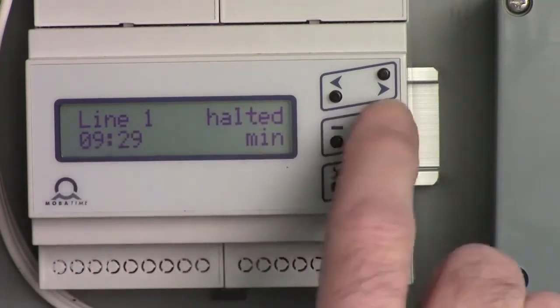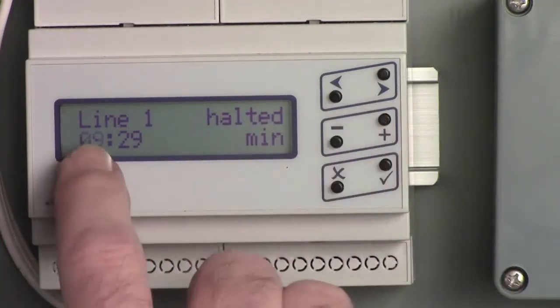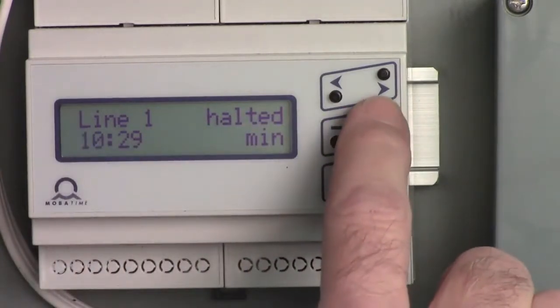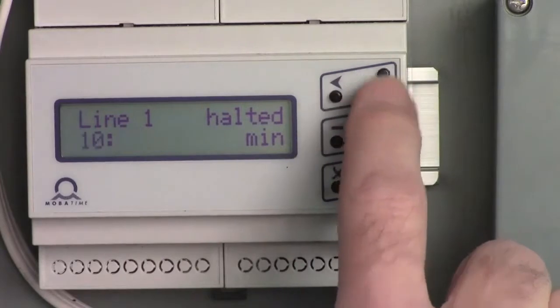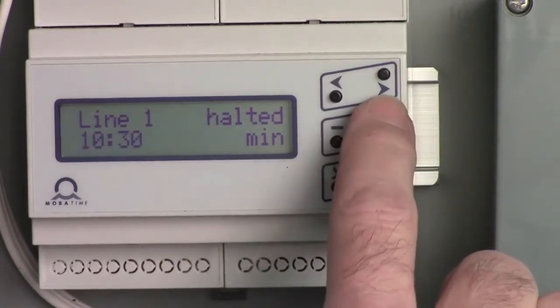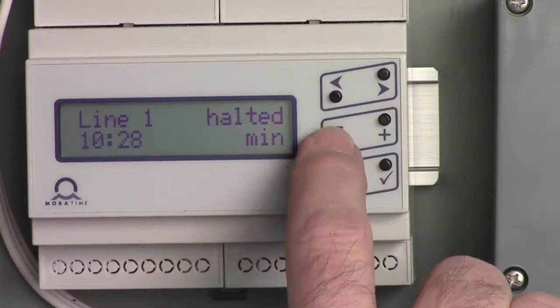To change the time on that screen, use the plus button. The hours will flash. Adjust accordingly with the plus or minus button. You can scroll to the right to adjust the minutes. Adjust with the plus or minus button.